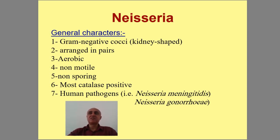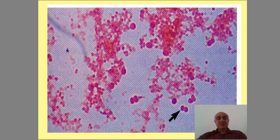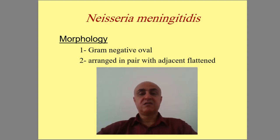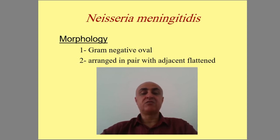Neisseria meningitidis is an important pathogen of the brain — it causes meningitis, which is an emergency. Neisseria gonorrhoeae is also important. These are gram-negative oval diplococci arranged with adjacent orientation.